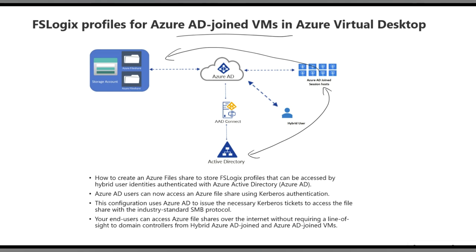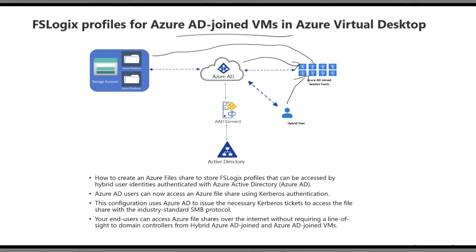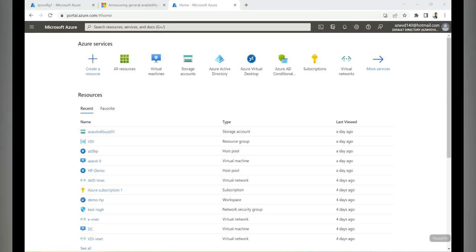This is accomplished with Azure AD Kerberos tickets. When a user logs into the Azure AD joined session host, Azure AD issues an Azure AD Kerberos ticket. The session host presents that ticket to the storage account, which verifies it with Azure AD. If the user is valid and authorized, it grants access to the file share to create FSLogix profiles. That's the architecture.